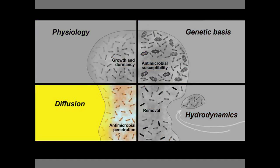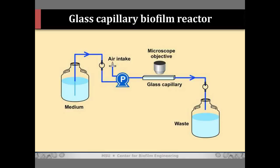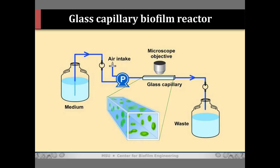Let's start with the question of diffusion and penetration. This is the most intuitive explanation for why a biofilm is hard to kill — that the drug or disinfectant just doesn't get in. I'd like to show you a movie made in the lab of an antibiotic working its way into a big staph biofilm. This is a flow cell system, a continuous system in which the biofilm grows in a little glass tube with a square cross section.